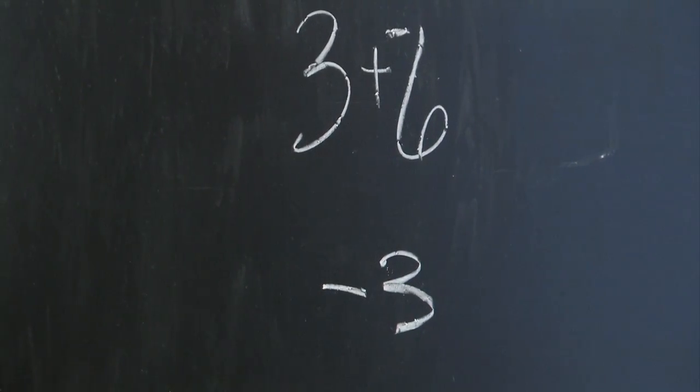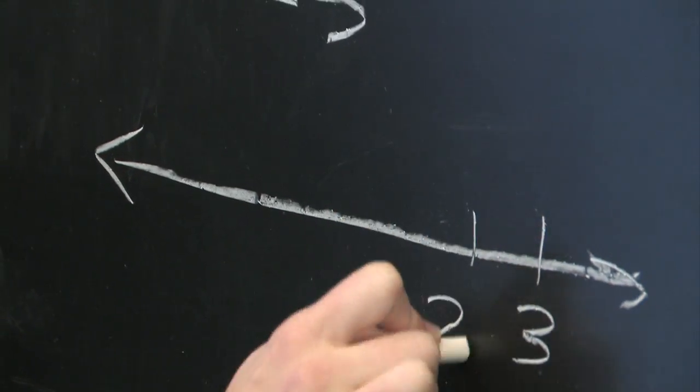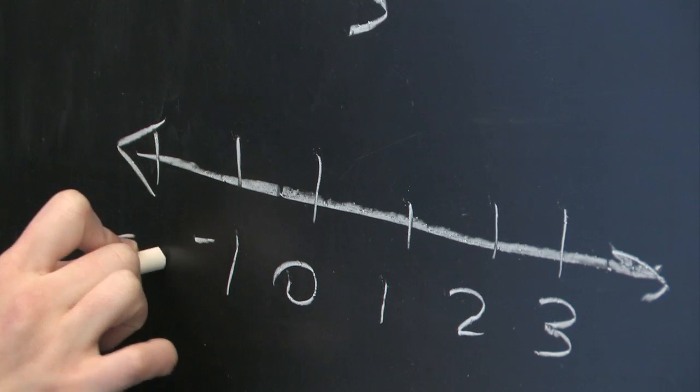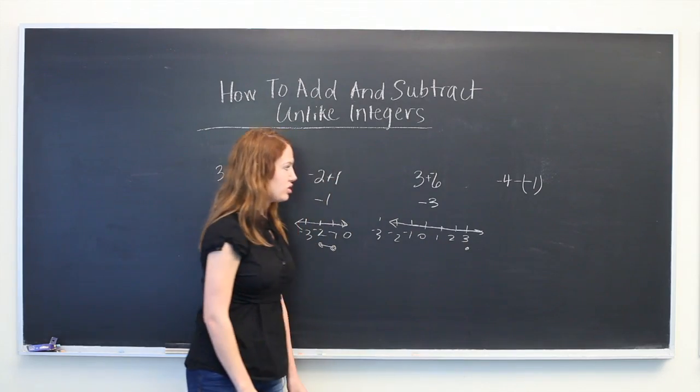If that's confusing, you can picture a number line with 3. You start here, and since you're subtracting 6 or adding -6, you go down 6 places.